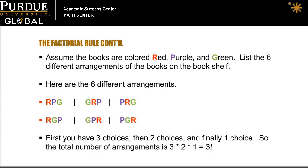Let's go through and look at the possible arrangements. Assume that the books are red, purple, and green. And let's see if we can list those six different arrangements of the books for the bookshelf just to make sure.